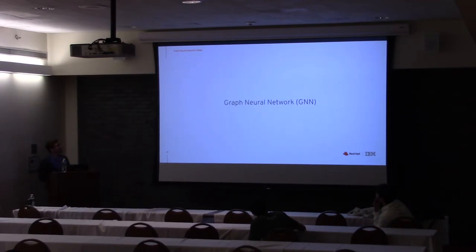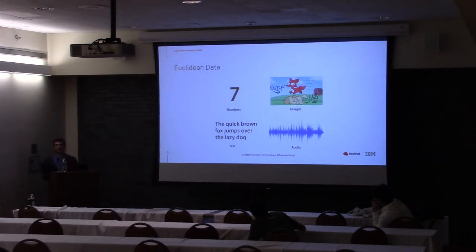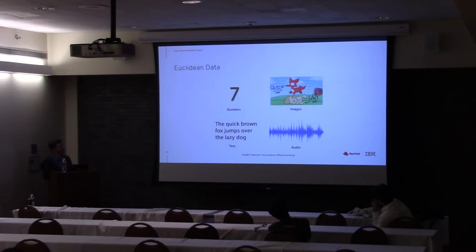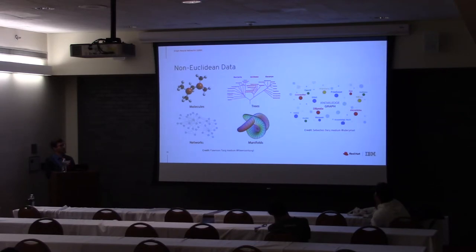Now I will go a bit deeper into graph neural networks. First, the motivation — why we moved from traditional neural networks to graph neural networks. Most traditional neural networks deal with Euclidean data: images, numbers, text, audio. But there is another class of data called non-Euclidean data, which requires different approaches — graph structures, trees, networks, manifolds. Non-Euclidean data is actually a superset of graphs, and there are approaches called geometric deep learning, which is the domain above graph neural networks.